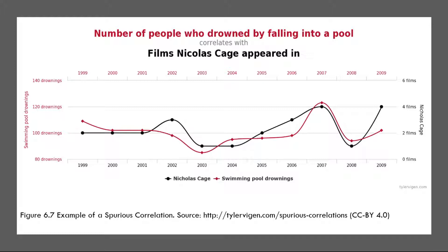Correlation does not imply causation. An amusing example comes from a 2012 study showing a positive correlation (Pearson's R = 0.79) between the per capita chocolate consumption of a nation and the number of Nobel Prizes awarded to citizens of that nation. It seems clear, however, that eating chocolate doesn't cause people to win Nobel Prizes — it wouldn't make sense to recommend that parents feed their children more chocolate to increase Nobel Prize wins. There are two reasons that correlation does not imply causation.